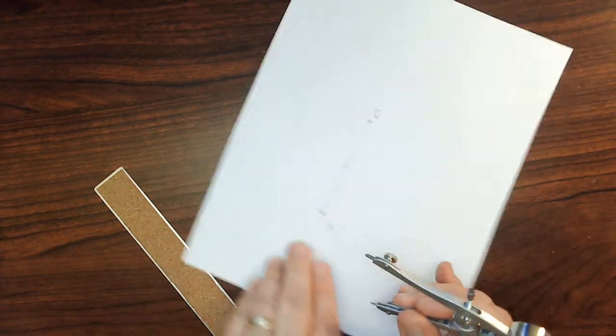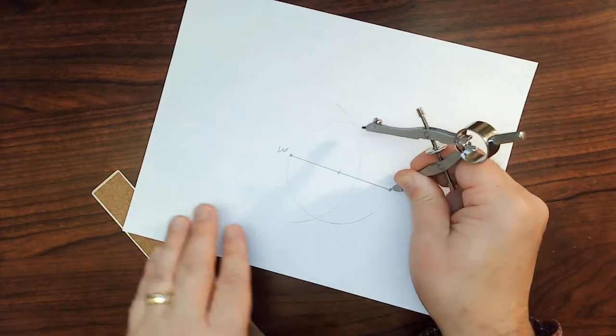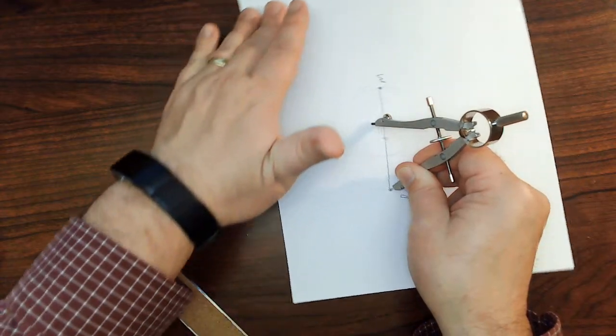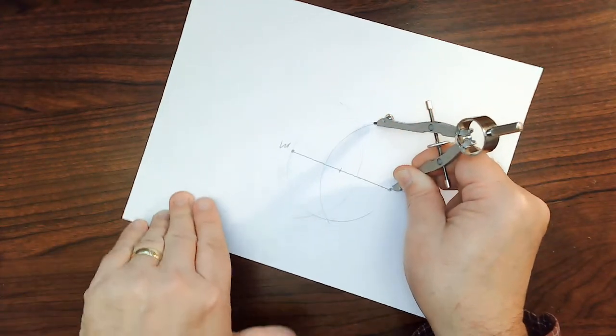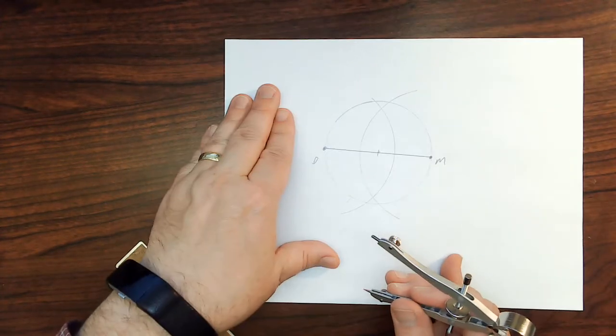I'm going to put the pivot on the other end point of the diameter, and I'm going to make another arc. There it is.